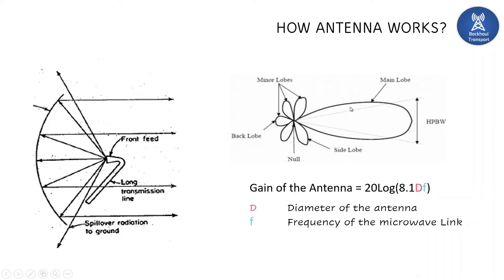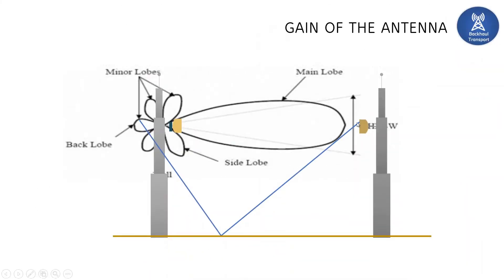If the front-to-back ratio is very low, two problems arise. First, the side lobes or minor lobes are exposed to the sun, creating noise. Second, microwaves reflected from an opposite antenna can reach the side lobes, and if the side lobe power is quite high it creates interference. Normally there is a power difference of 35 to 40 dB between the main lobe and the side lobes.